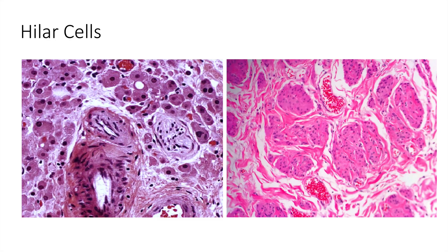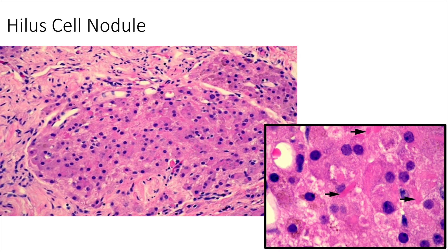Another benign cell you'll note in the ovary is the hilar cell. These are morphologically identical to Leydig cells of the testicle and are found, as the name suggests, near the ovarian hilum. Mild hyperplastic changes in these cells are more common in postmenopausal women. When these cells aggregate together to form small nodules, they're known as hilar cell nodules. Reinke crystals are present in some hilar cells, as pictured on the bottom right with the arrows.